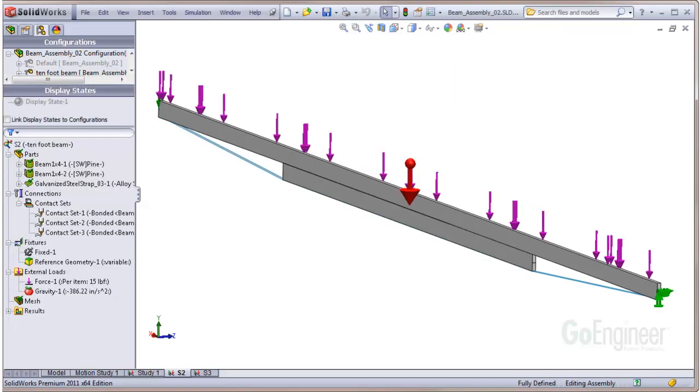Here's the distributed load on the top surface and the gravity symbol for dead weight of the components. The end supports are pivots on split lines.